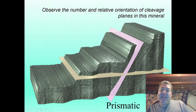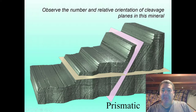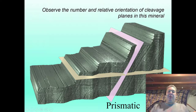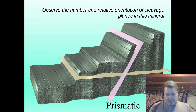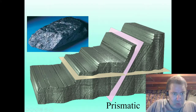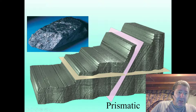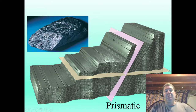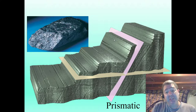But here we have two directions not at right angles — more at a 60 and 120 degree angle. So when you break this, instead of the side profile being square, it's going to be oblique. An example would be our amphibole hornblende here, and you can see this kind of 60 and 120 degree angle. Note those differences in angle between the two different types of prismatic cleavage.